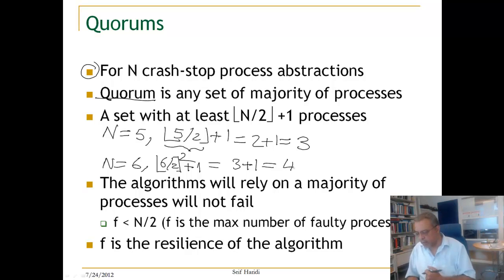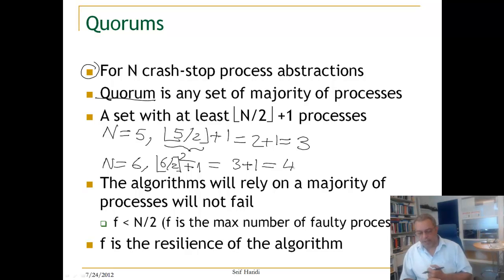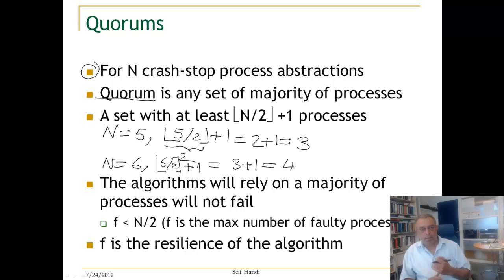Some algorithms will work, satisfying both safety and liveness, only if a quorum of correct processes can be established. The algorithm relies on a majority of processes not failing. If we cannot establish a quorum of correct processes, then normally liveness will not be satisfied, but safety is still satisfied in these algorithms.